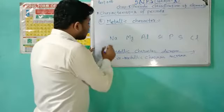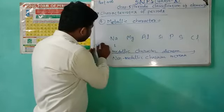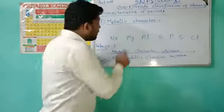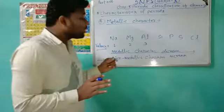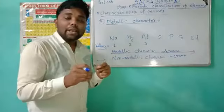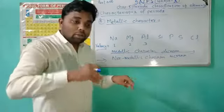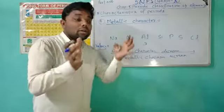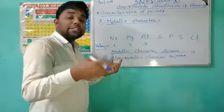When we talk about sodium, its valency is one. Magnesium has a valency of two and aluminium has a valency of three — I am talking about valency, not valence electrons. Sodium has one electron in its outermost shell and can easily lose it to obtain the octet state of eight electrons.